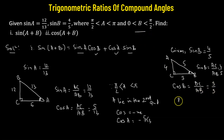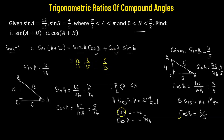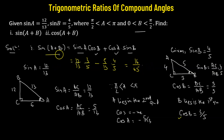Since b lies between 0 and pi over 2, angle b lies in the first quadrant, where all trigonometric functions are positive, so cosine b equals positive 3 over 5. Now we plug these values into sine a·cos b plus cos a·sin b: sine a is 12 over 13, cosine b is positive 3 over 5, cosine a is negative 5 over 13, and sine b is positive 4 over 5. Solving this gives us positive 16 over 65, which is the value of sine(a+b).